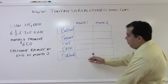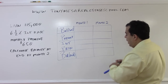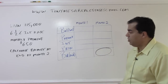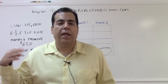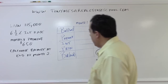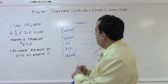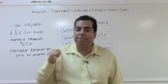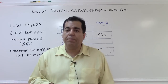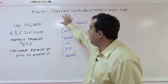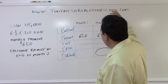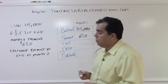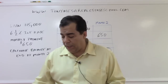Before doing any calculation, be clear about what the problem is asking: the balance at the end of month two. Circle that on the state exam, because the balance at the beginning of month one, the interest, or the principal might appear as incorrect answer choices. The monthly payment is $650 in month one, $650 in month two — it's a fixed rate loan. The loan amount of $115,000 is the balance at the beginning of month one, before any payments.